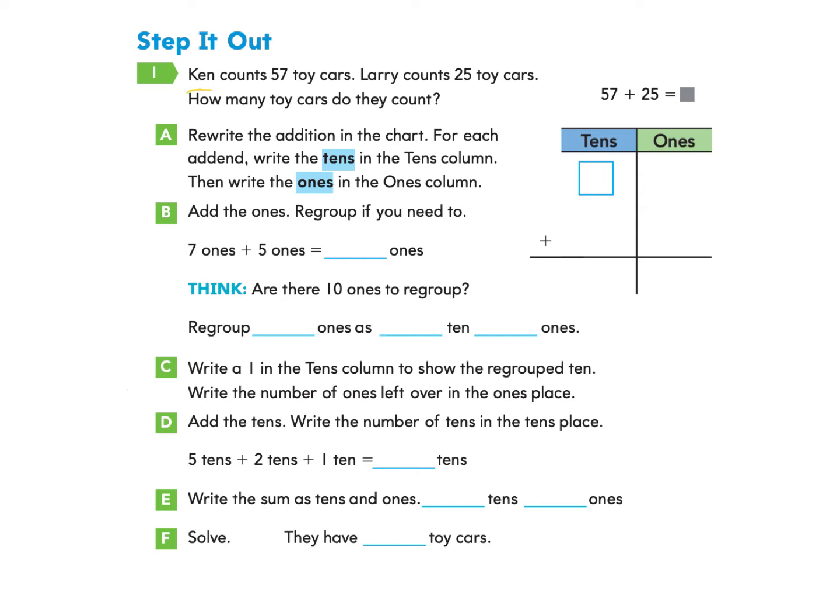Ken counts 57 toy cars. Larry counts 25 toy cars. How many toy cars do they count? Let's follow the directions A through F together. We're going to start with A. Rewrite the addition in the chart. Here is the chart that they give us. For each addend, write the tens in the tens column, then write the ones in the ones column.